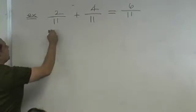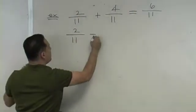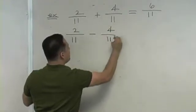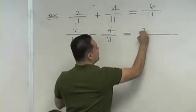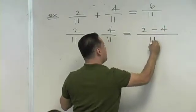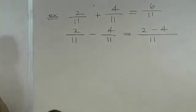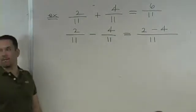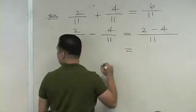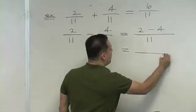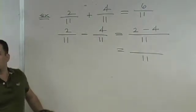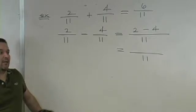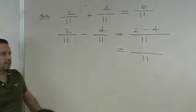What if they said this? Two elevenths minus four elevenths. What does that give you? So that's two minus four over eleven. What is two minus four?